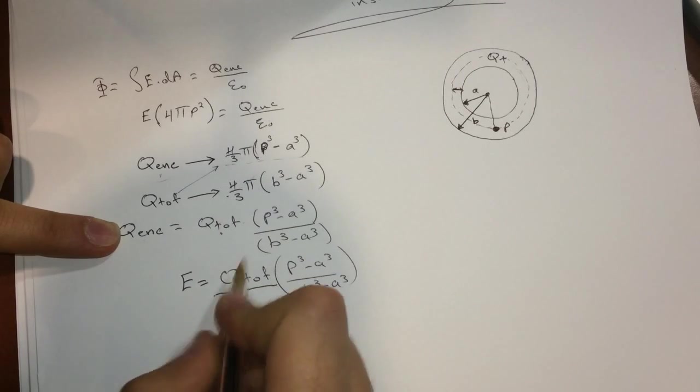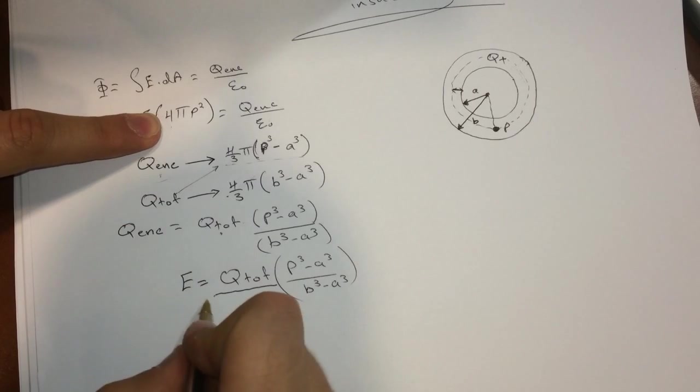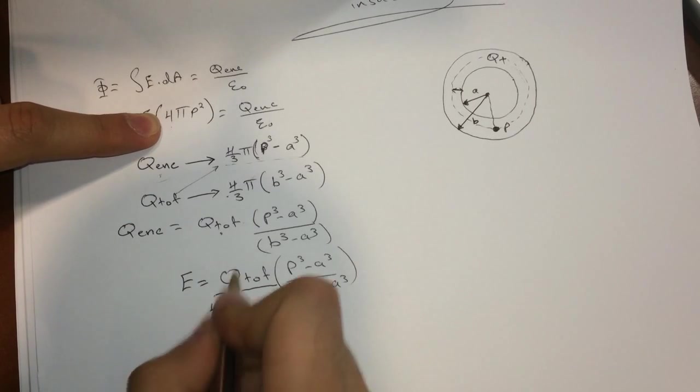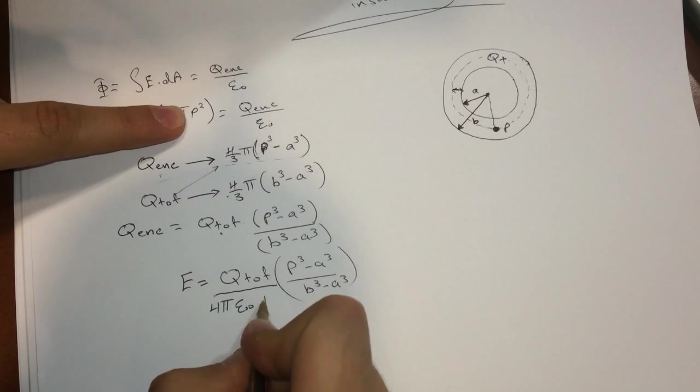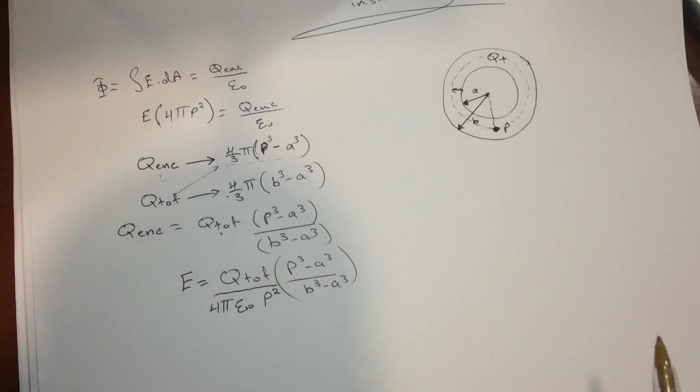And it will be divided by, when you divide this it will be 4π, and don't forget the epsilon not, P². Okay.